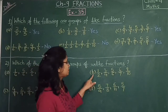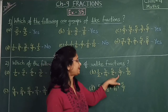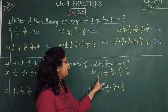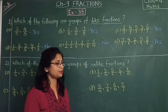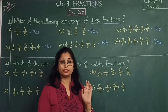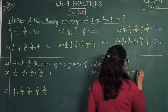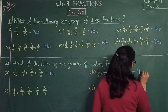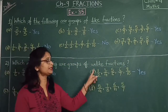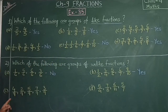Next question: 1 by 2, 3 by 4, 5 by 6, 6 by 7, 9 by 10. Is this an unlike fraction? Yes. Because here the denominator is different. Different denominators — so this group of fractions is an unlike fraction.